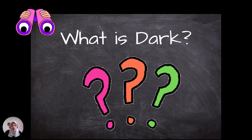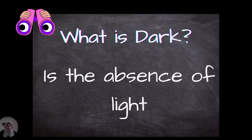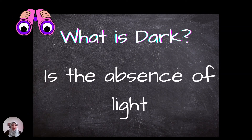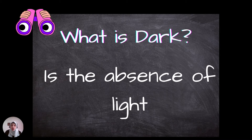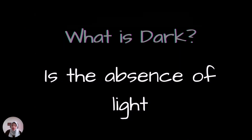Let us learn the meaning of dark. What is dark? Dark means the absence of light — the total absence of light. When there is no light entering our eyes, we cannot see. It's dark.